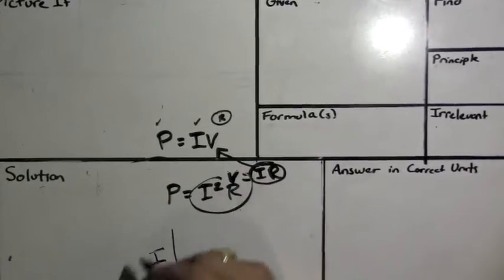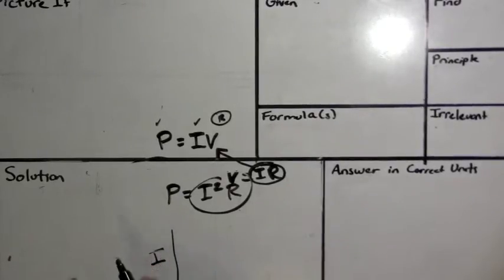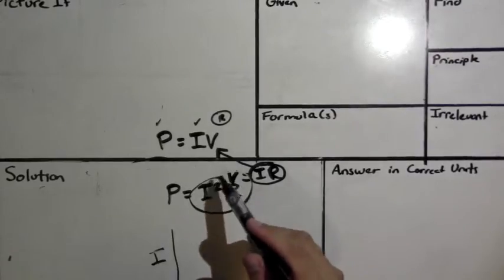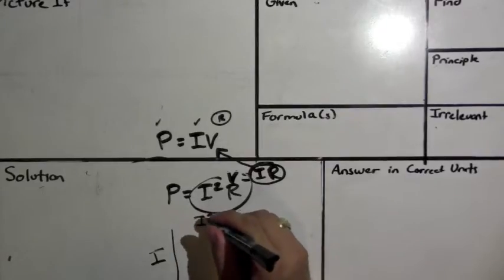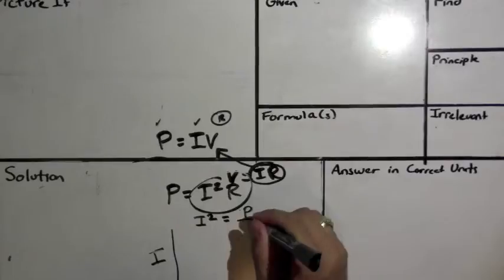So the first thing you should realize is I squared and R are actually on the same side. So what you need to do is you need to move one over to make this actually work. So what I'm going to do is I'm going to move R over just to make it a little bit easier. So I'm going to have I squared equals P divided by R.